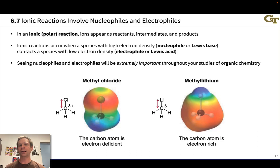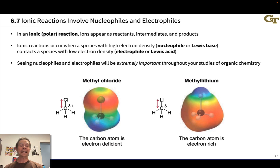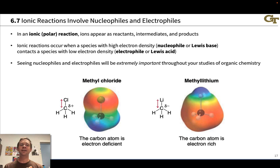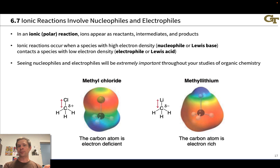In an ionic or polar organic reaction, ions appear as reactants, intermediates, and products. In these reactions, the key idea is encapsulated by Lewis acid-base theory: there are electron-rich atoms and electron-poor atoms, and spontaneous polar reactions involve a flow of electrons from the electron-rich atoms to the electron-poor atoms.